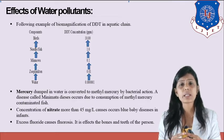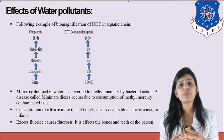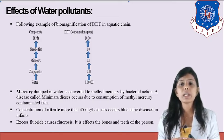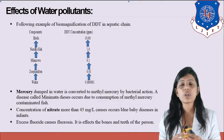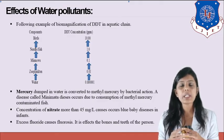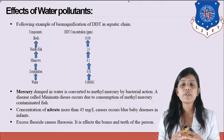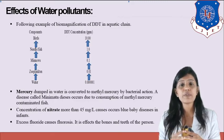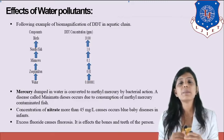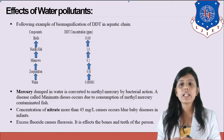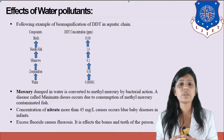Mercury dumped in water is converted to methyl mercury by bacterial action, which is harmful. A disease called Minamata disease occurs due to consumption of methyl mercury-contaminated fish. If the concentration of nitrate exceeds 45 mg per liter, blue baby disease is caused in infants. Excessive fluoride causes fluorosis, affecting the bones and teeth of a person.